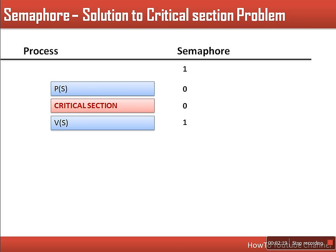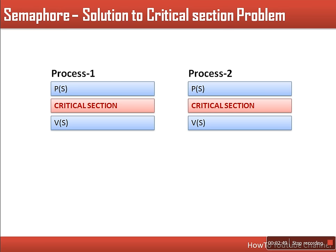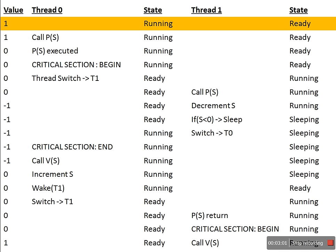In case another process also wants to enter the critical section, that process will have the same code. When that process calls P, it decreases the value from 0 to minus 1 and that process keeps on waiting. We will see an example with two processes — how mutual exclusion will be achieved and how it will solve the critical section problem. Both processes will have the same code, and for our example we are using threads.